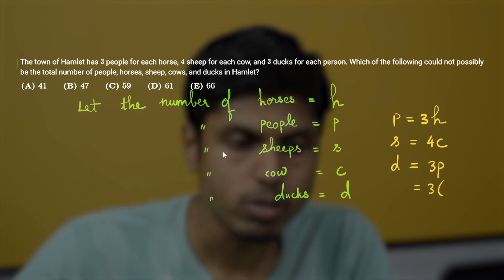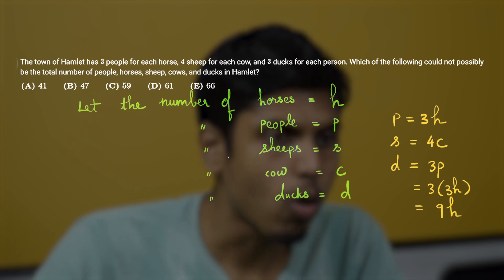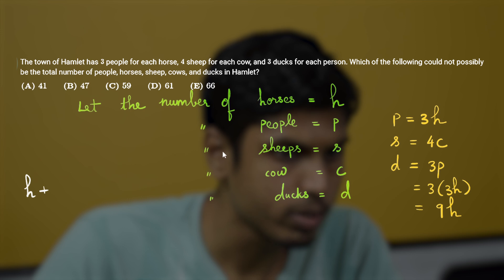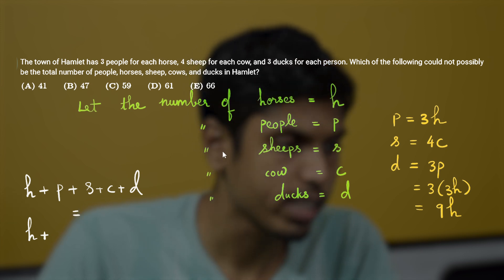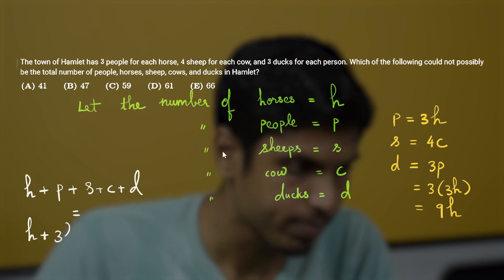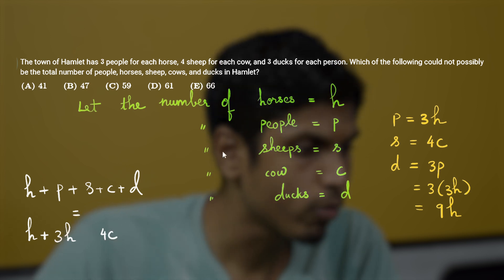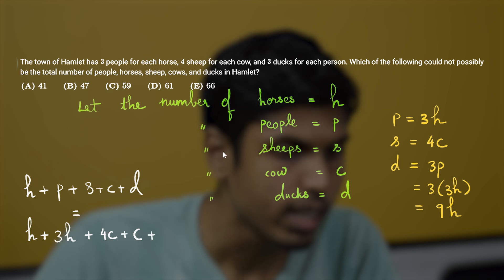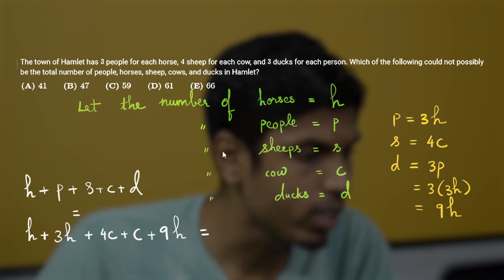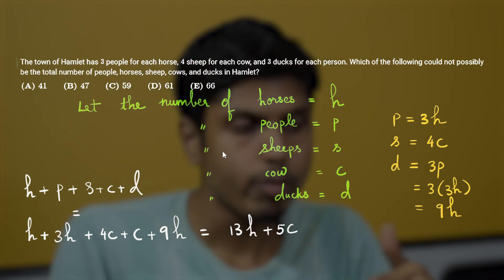The number of ducks equals three times the number of people, which in turn is 3 times 3h, giving 9h. Adding all variables — h + p + s + c + d — and substituting: p = 3h, s = 4c, c stays as c, and d = 9h. This totals 13h + 5c.